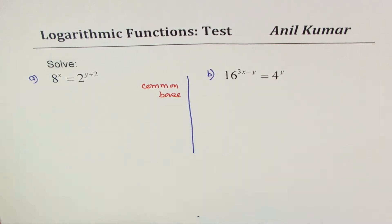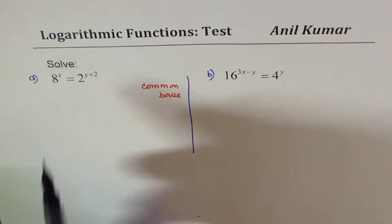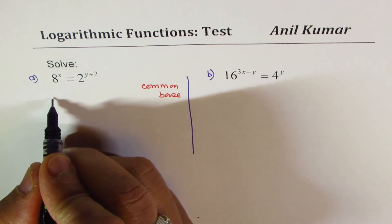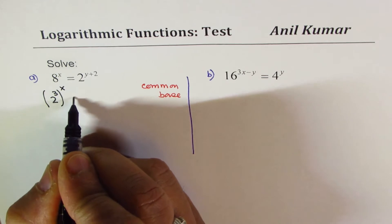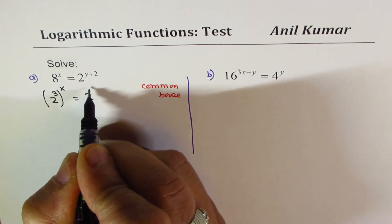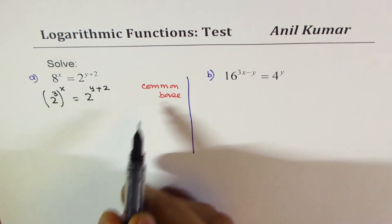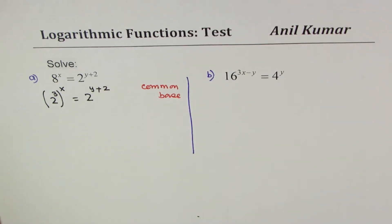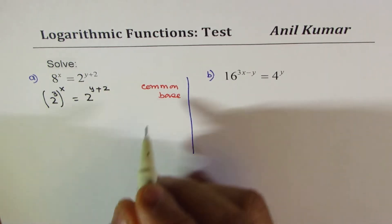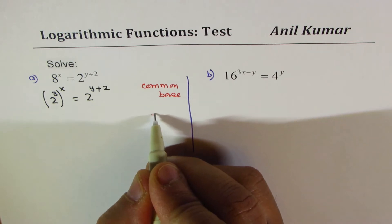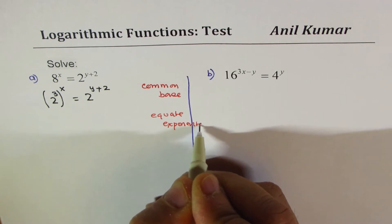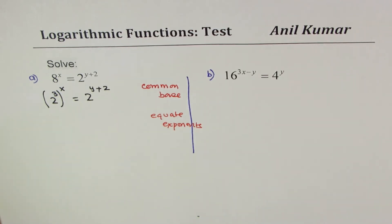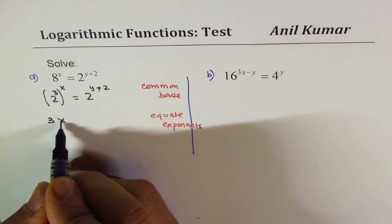The common base is 2 for them, right? So we could write 8 as 2 cubed, and we have 2 to the power of x equals 2 to the power of y plus 2. Once we have a common base, we can actually compare the exponents. Now we'll equate exponents.